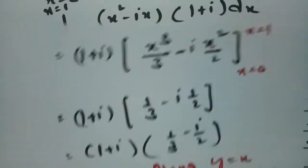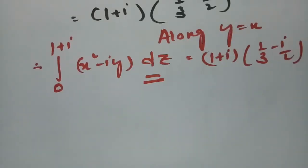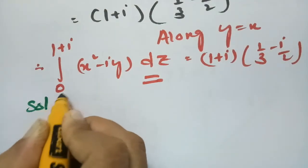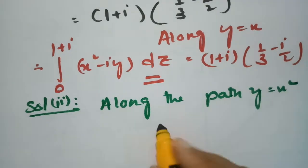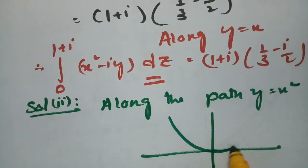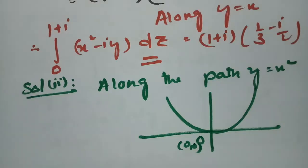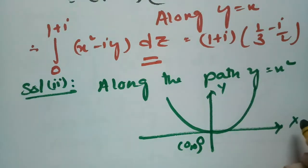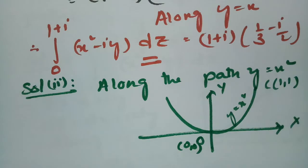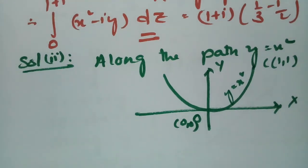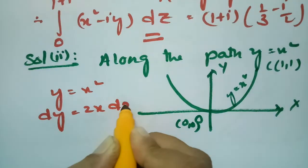The second path is along y = x². This is Solution 2, along the path y = x². Since x is squared, it will be of a cup shape — this is a parabola. The origin is at (0, 0) and the endpoint C is at (1, 1). We have to evaluate the integral using y = x².